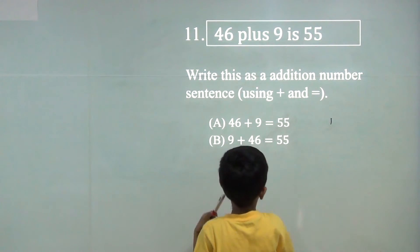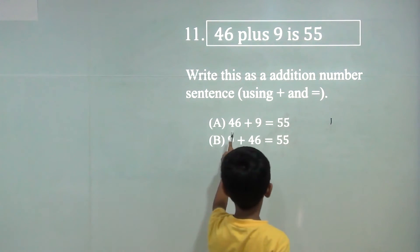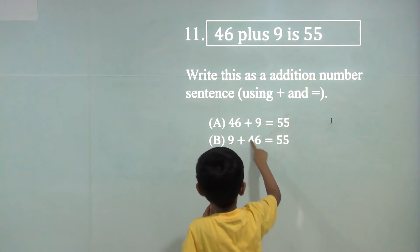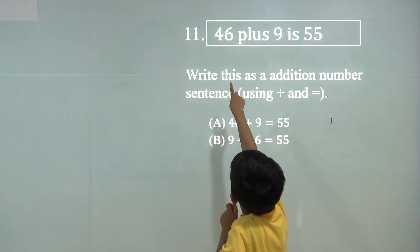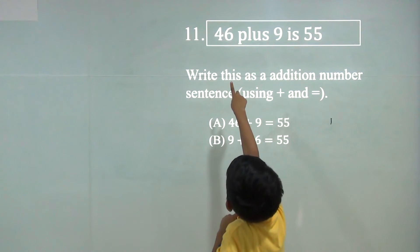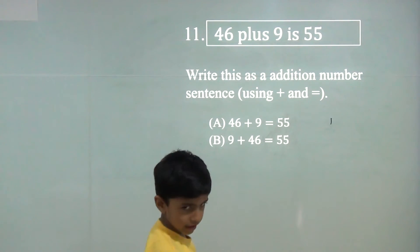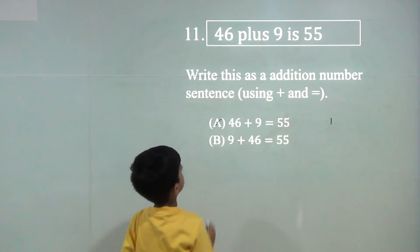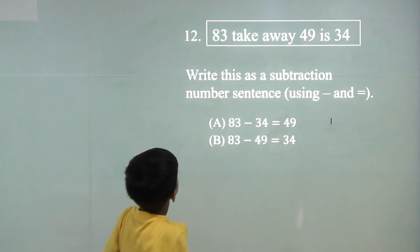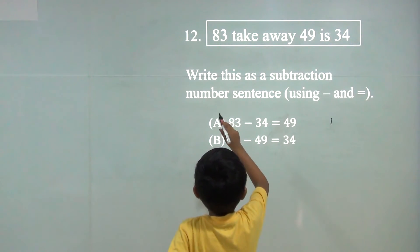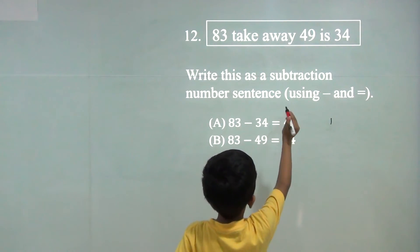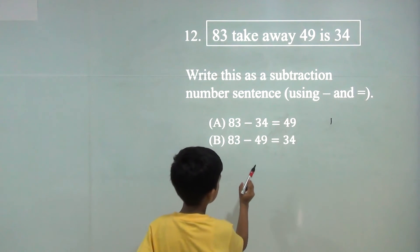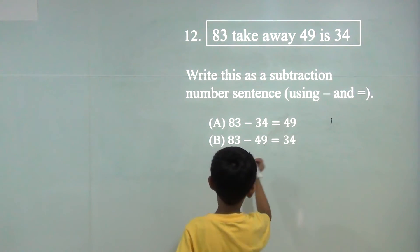46 plus 9 is here also the same. There are changes but in the question there is given 46 plus 9, so here 46 plus 9 is 55. So A would be correct. 83 take away 49 is 34. 83 minus 49 is 34. B.